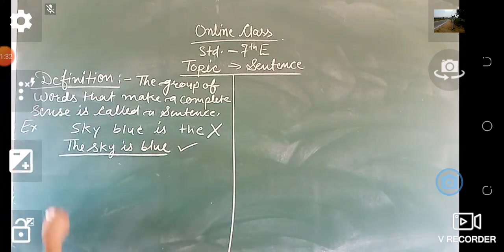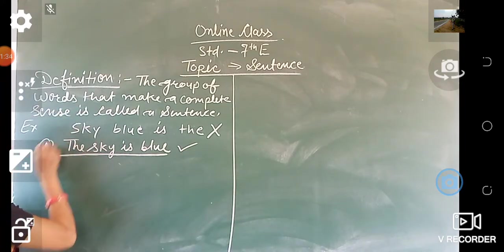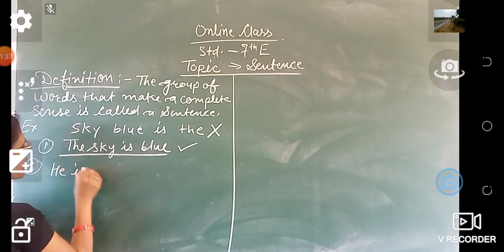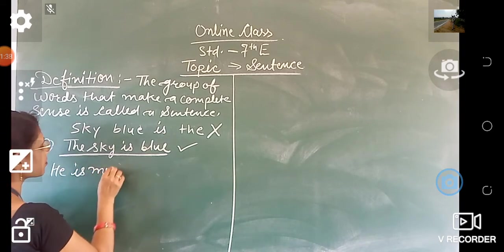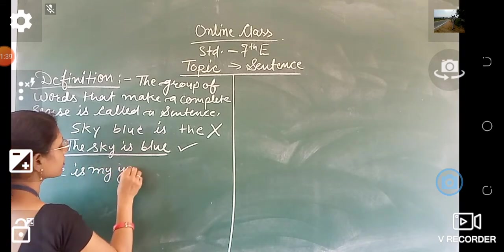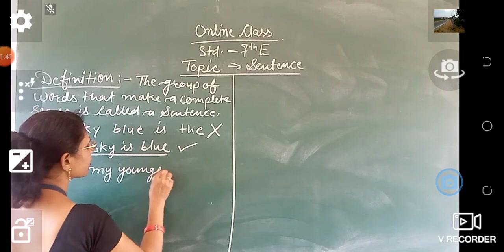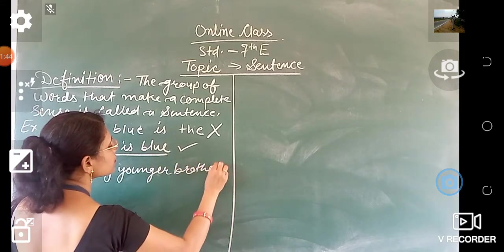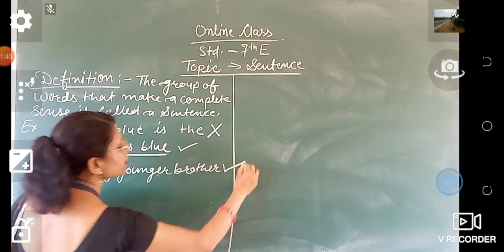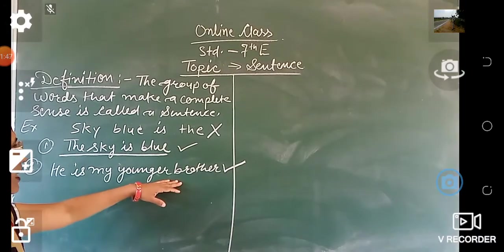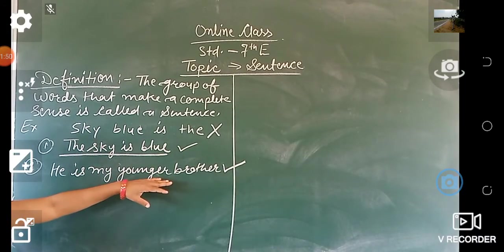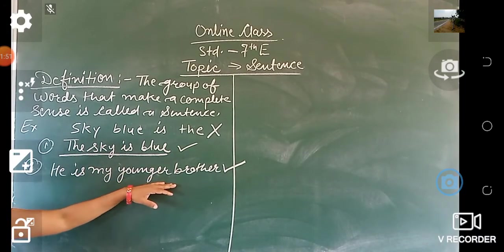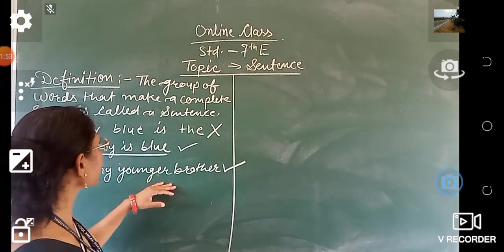Another example: 'He is my younger brother.' This is a sentence which gives you a complete sense, so it is a sentence.